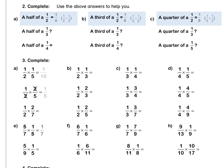Question 2. A half of a half is a quarter, because a half times a half is 1 over 4. A half of a third — a half times a third is one sixth. Therefore, a half of a third is a sixth.